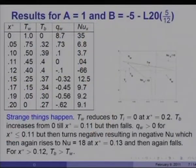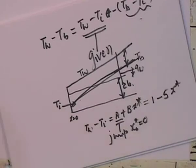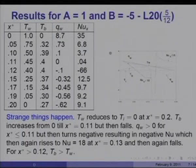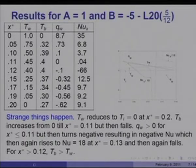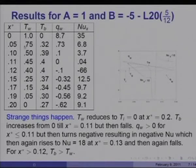Now I am going to assign some values to A and B and see what happens. I consider a case of T_wall minus T_i equal to 1 minus 5x*. Therefore the wall temperature declines as x increases. The values assigned are shown in the graph. I have computed up to the point where T_wall minus T_i reduces back to 0, i.e., where wall temperature returns to inlet temperature. The initial jump is A equal to 1 and at x* equal to 0.2, the wall temperature equals the inlet fluid temperature.